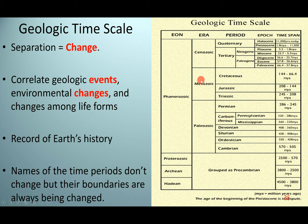The names of time periods don't change, but their boundaries can change. If you ever see 'MYA,' it means millions of years ago, and 'BYA' means billions of years ago. So the names always stay the same, but when these periods or eras happened can change depending on new evidence that's found.